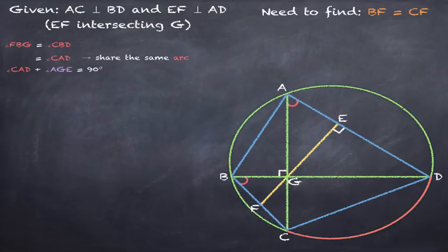Angle CAD plus angle AGE equals 90 degrees by our triangle sum. We'll also find that angle DGE plus angle AGE equals 90 degrees because line AC is perpendicular to line BD, which is given to us.